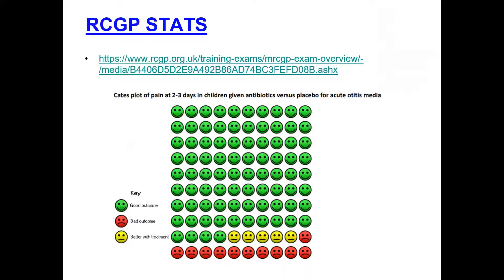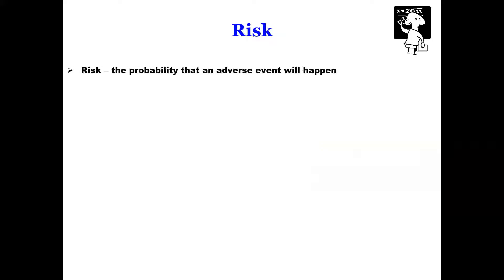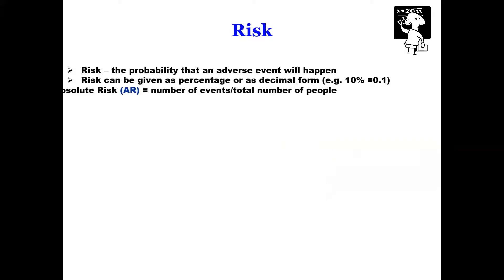Case plots are really topical. There's a document on the college website which you can download highlighting a number of different plots. Case plots are all based on risk. Risk is the probability that something bad is going to happen — you can only work that probability out if you're moving forward, so it's a prospective measure. It can be given as a percentage or as a decimal form.